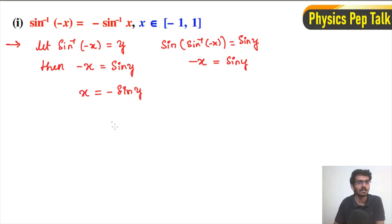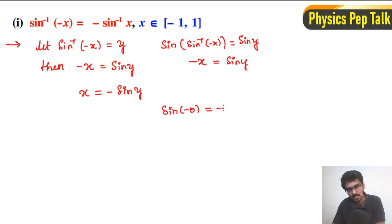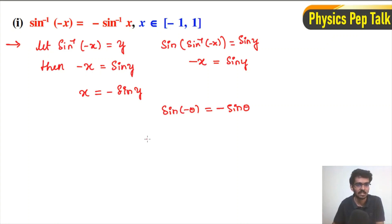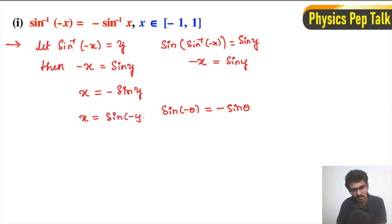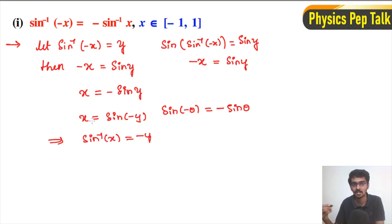We have to make use of the property. This can be written as x is equal to sin of minus y. Again, this can be written as sin inverse of x is equal to minus y, after operating sin inverse on both sides. Sin inverse of sin of minus y is equal to minus y.